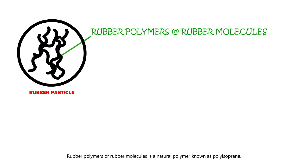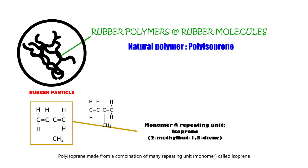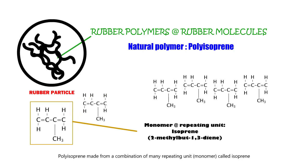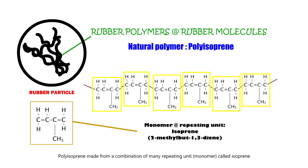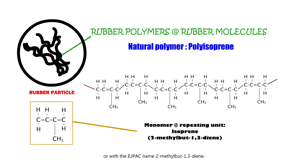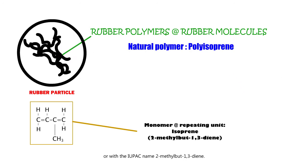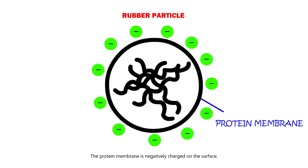Rubber polymers, or rubber molecules, is a natural polymer known as polyisoprene. Polyisoprene is made from a combination of many repeating units, called monomers, called isoprene, or with the IUPAC name 2-methylbut-1,3-diene. The protein membrane is negatively charged on the surface.